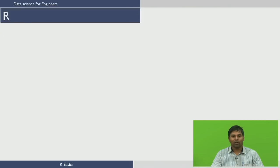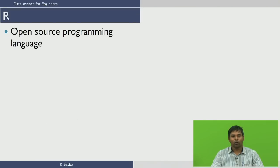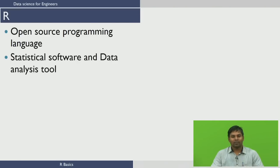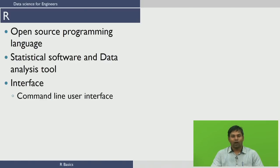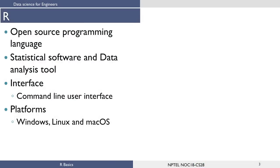Let us first see what is R. R is an open source programming language that is widely used as a statistical software and data analysis tool. R generally comes with a command line interface. R is available across widely used platforms: Windows, Linux and Mac OS.